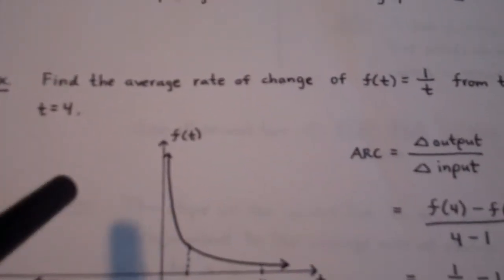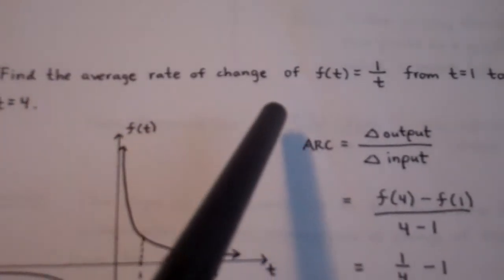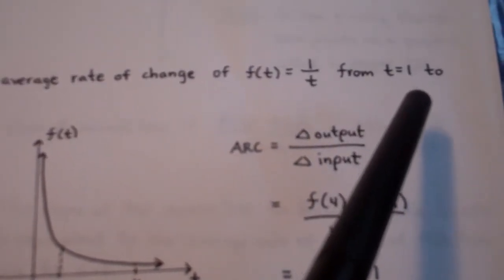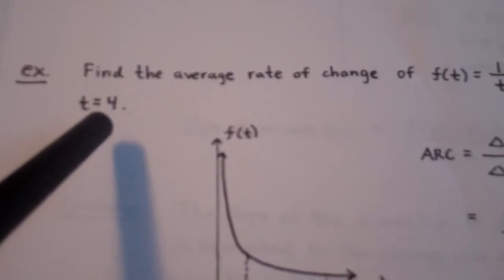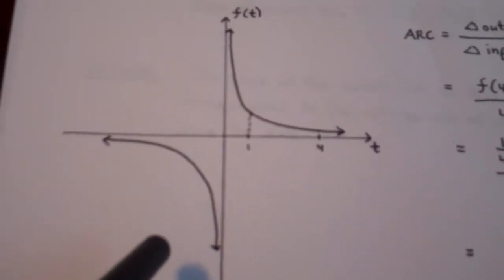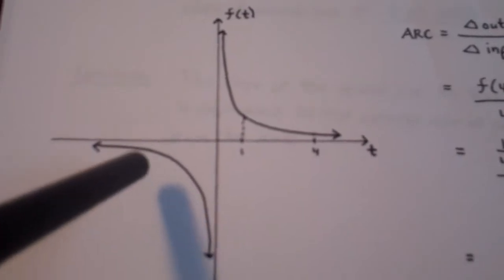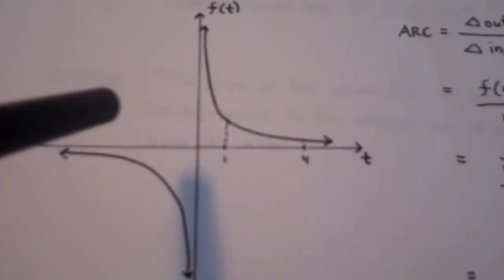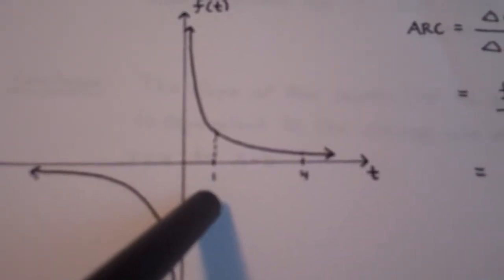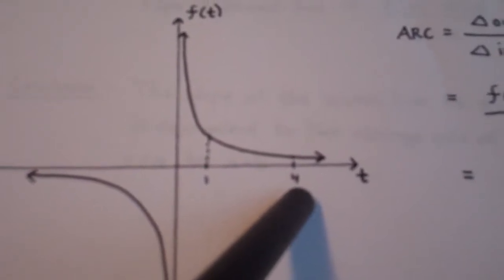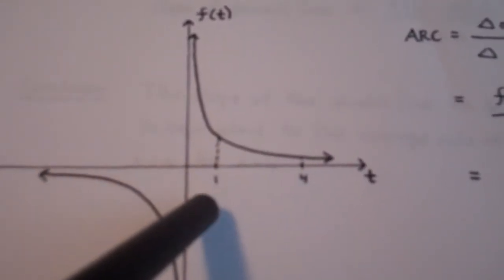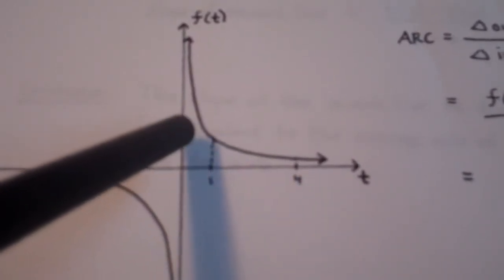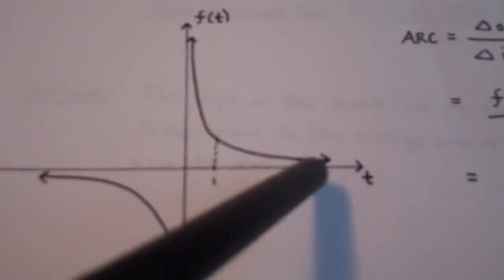Let's find the average rate of change of f of t equals 1 over t from t equals 1 to t equals 4. I've drawn the graph of the 1 over t function — another one of your six basic functions. Here t equals 1 is on the left and t equals 4 is on the right. Looking at the graph between t equals 1 and t equals 4, the function is decreasing over that interval.